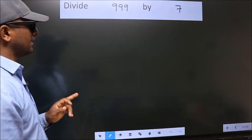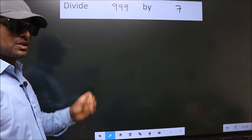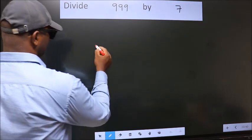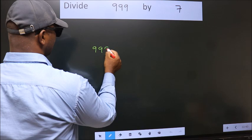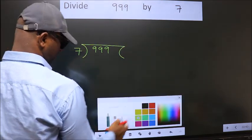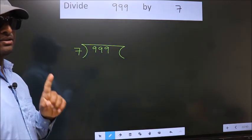Divide 999 by 7. To do this division, we should frame it in this way. Okay. 999 here, 7 here. This is your step 1.